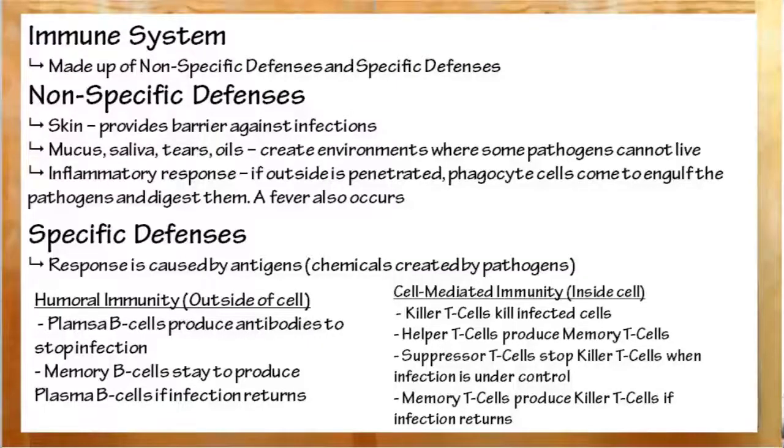To recap, the immune system has non-specific defenses and specific defenses. The non-specific defenses. First line of defense, skin. Also, bodily secretions, such as mucus, saliva, tears, and oils. These make it very difficult for infections to get into the body or to live there.